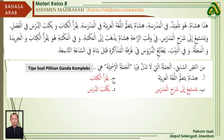Alif: Hisham yata'allamul lughatal arobiyyata - Hisham (isim) menjadi mubtada, yata'allamu (belajar) dan al-lughatal arobiyyata menjadi maf'ul bih. Ba': yastami'u ila syarkhil mudarrisi - Hisham mendengarkan penjelasan guru. Jim: yaqro'ul kitab. Dal: yaktubu tarsah. Pilihan jawaban Ba', Jim, dan Dal tidak memiliki isim di awal jumlahnya, sehingga bukan termasuk jumlah ismiyah. Maka jawabannya adalah Alif.